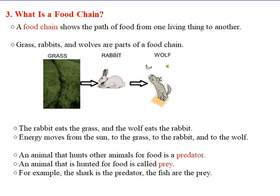Now I'm going to introduce two new words: predator and prey. An animal that hunts other animals for food is a predator. An animal that is hunted for food is called prey. For example, the shark is the predator — it hunts the fish for food. The fish are the prey — they are hunted by the shark for food.